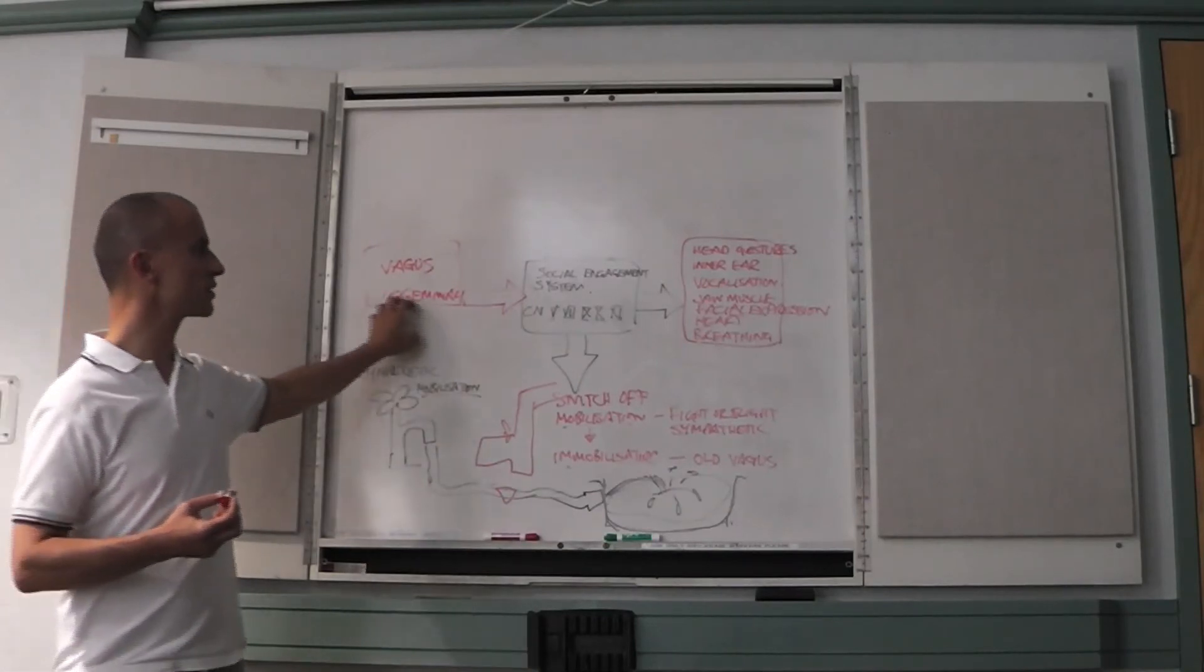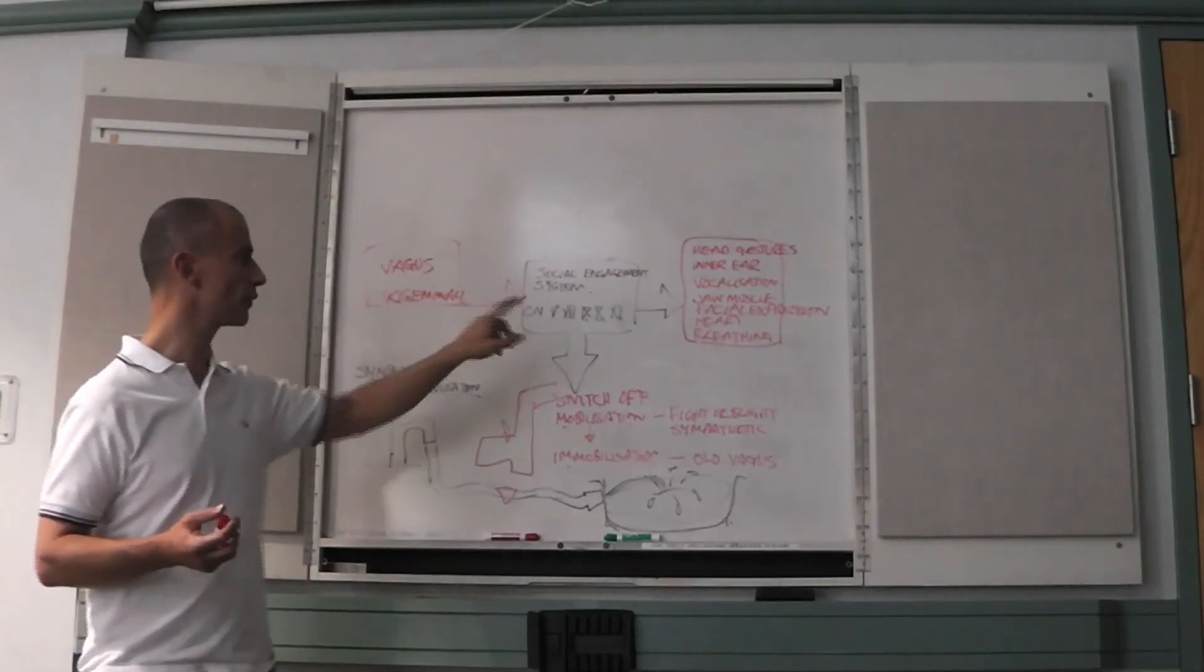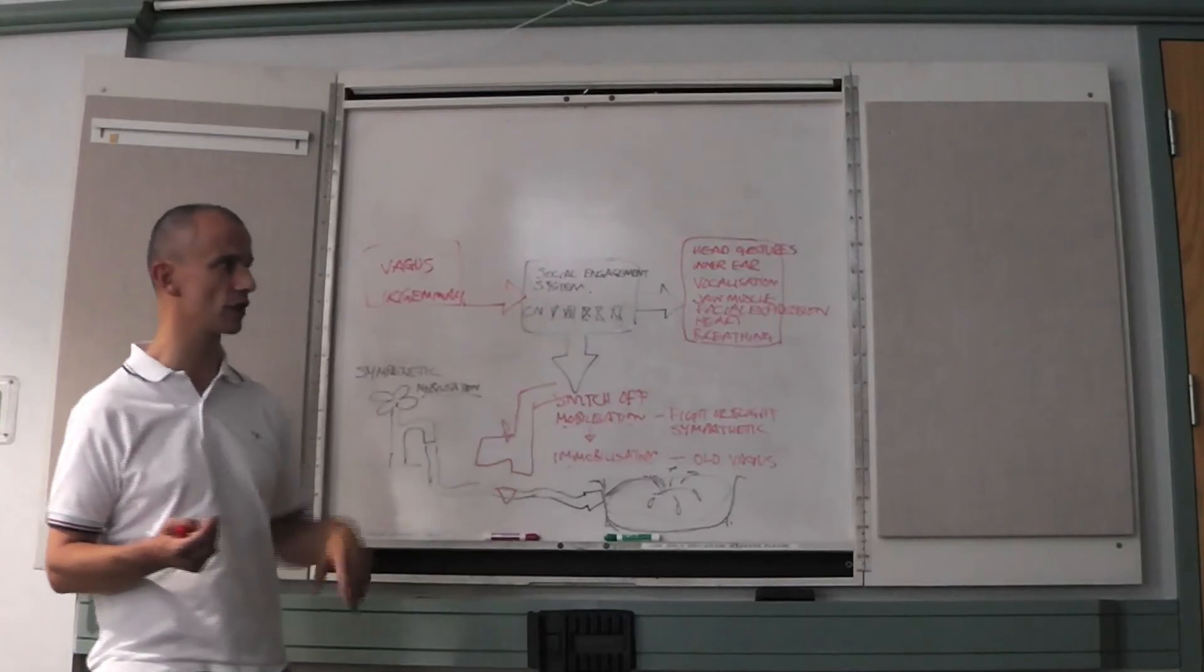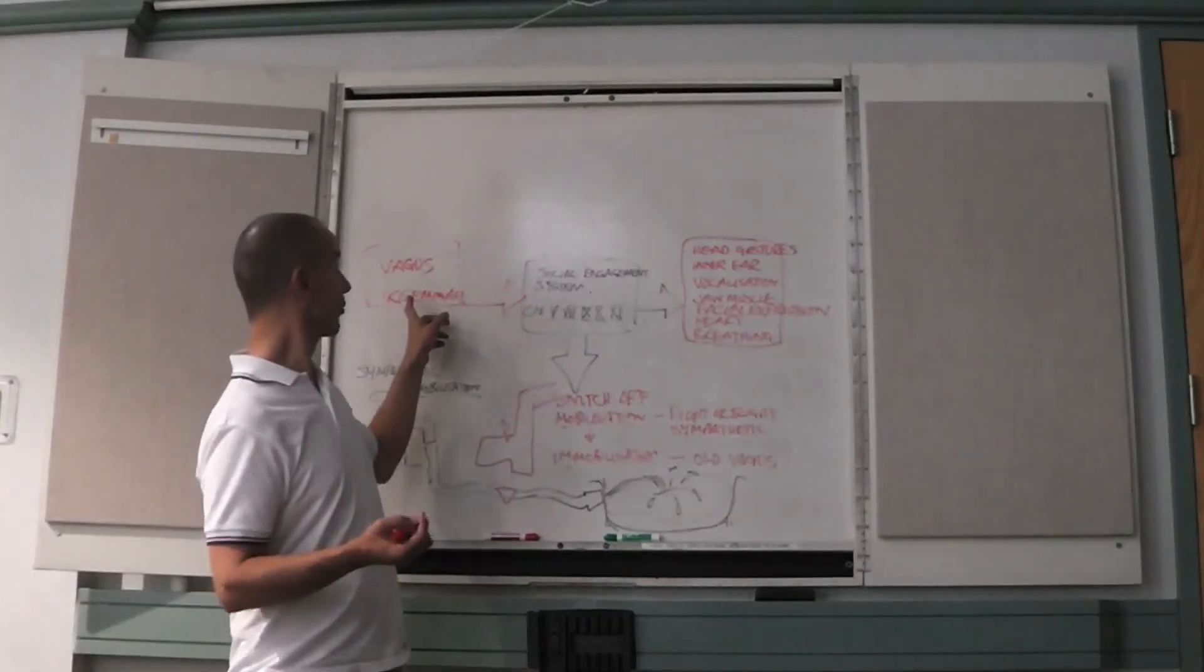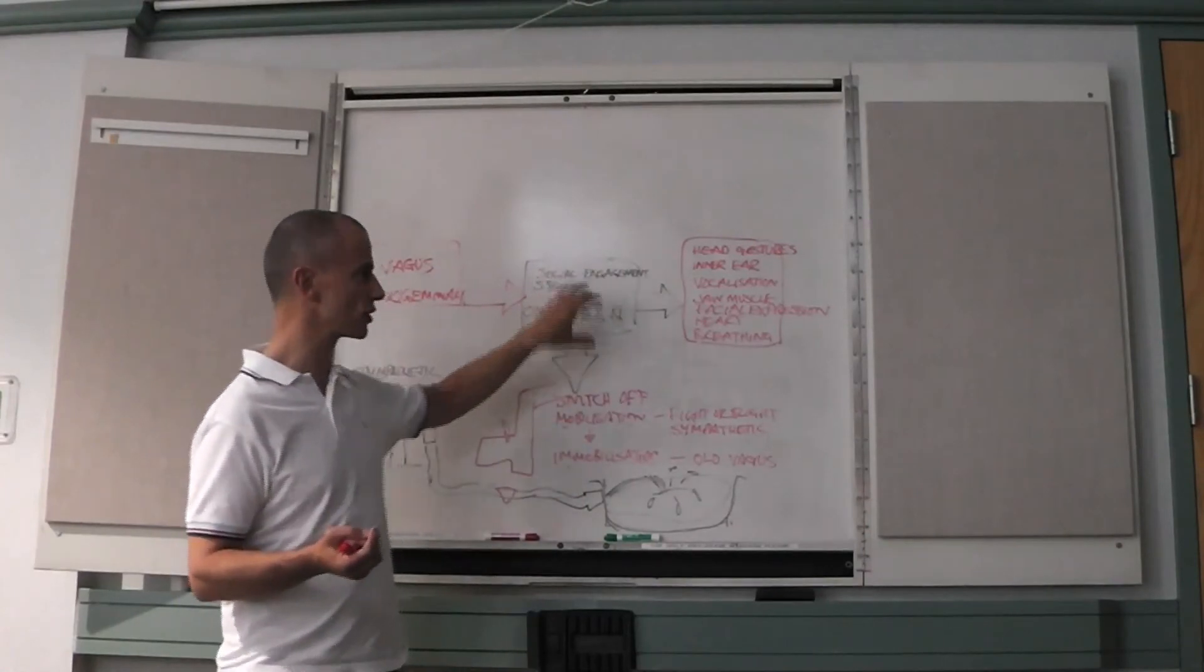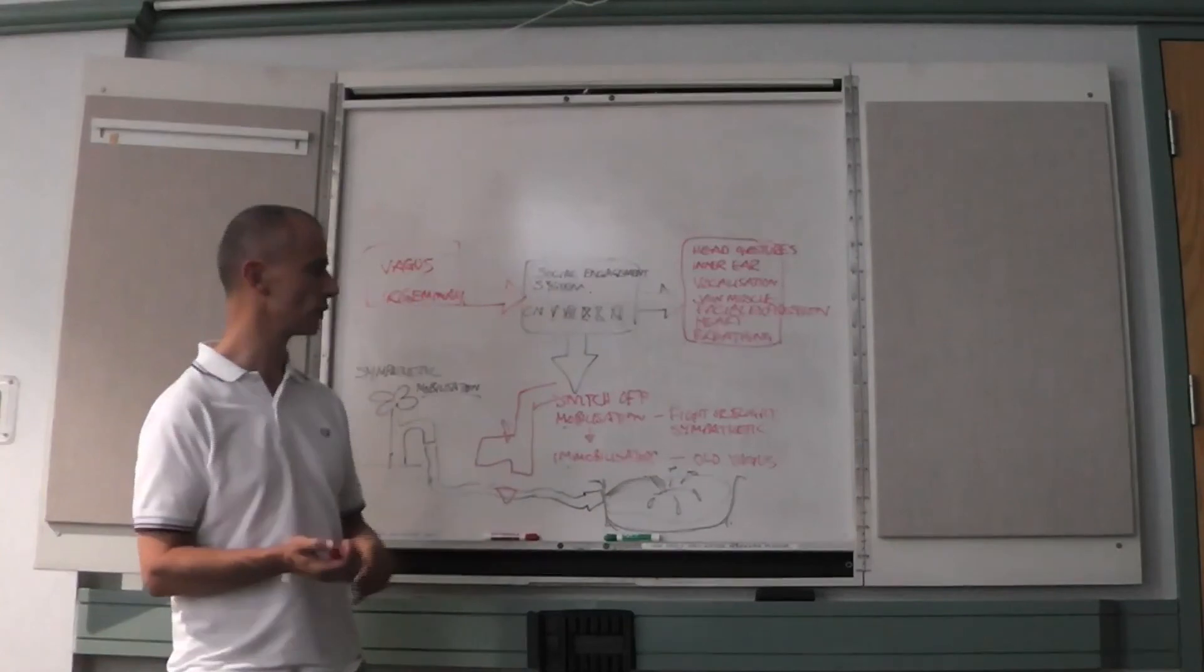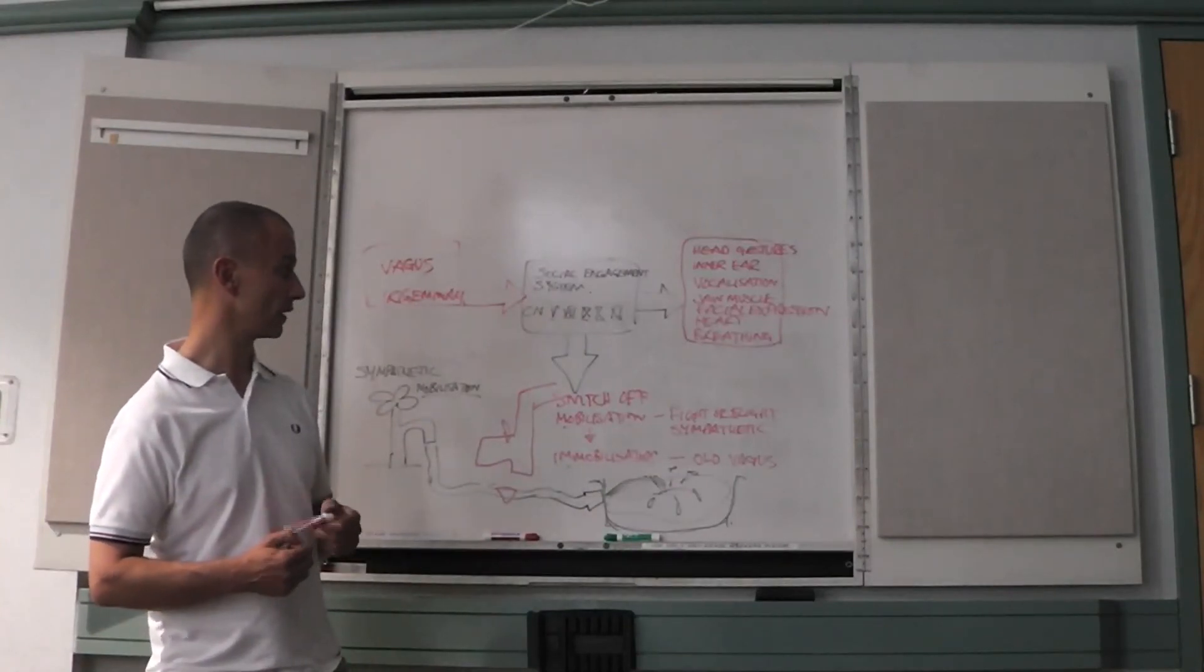So these are sensory inputs into the social engagement system, all the information from the vagus, all the information from cranial nerve 5, the trigeminal. So they will switch off social engagement. They will make sure social engagement works to switch off the fight or flight response which in turn will switch off the old vagus response.